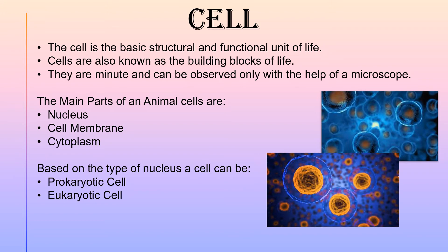The main parts of a cell are nucleus, cell membrane and cytoplasm. The nucleus is a dense rounded body that controls all the activities of the cell. The cell membrane is a thin layer that surrounds the cell. The cytoplasm is a jelly-like substance that is enclosed by the cell membrane.